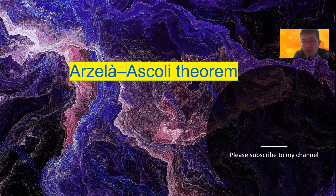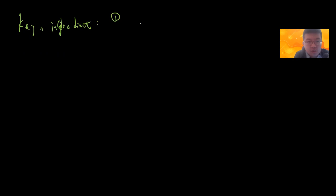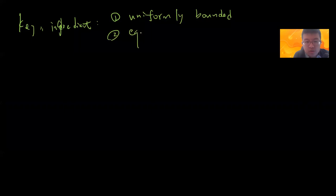Let me write down the key ingredients. There are three key ingredients: first is uniformly bounded, second is so-called equicontinuous, and third is compact.